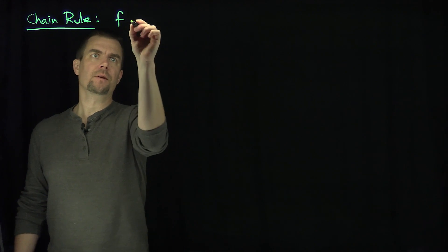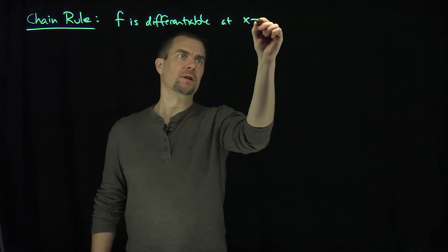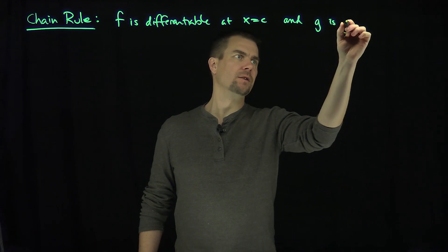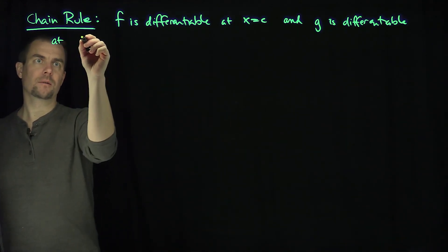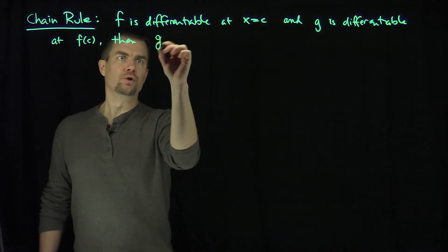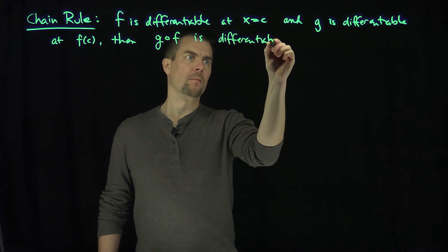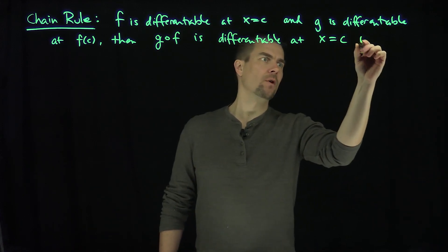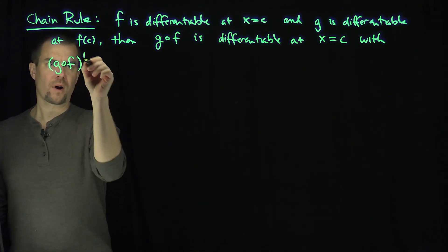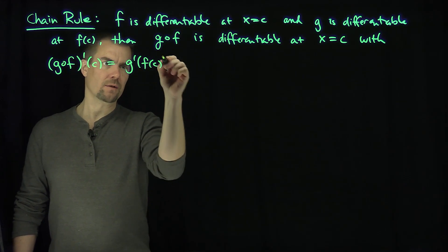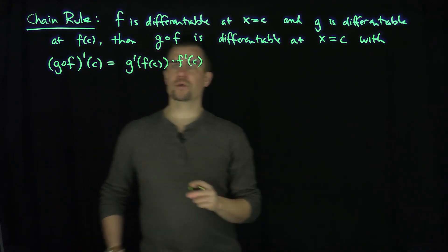The chain rule states that if f is differentiable at x equals c and g is differentiable at f of c, then g of f is differentiable at x equals c. In other words, g of f prime of c equals g prime of f of c — the derivative of the outer function evaluated at the inner function — times f prime of c, the derivative of the inner function. And that's the chain rule.